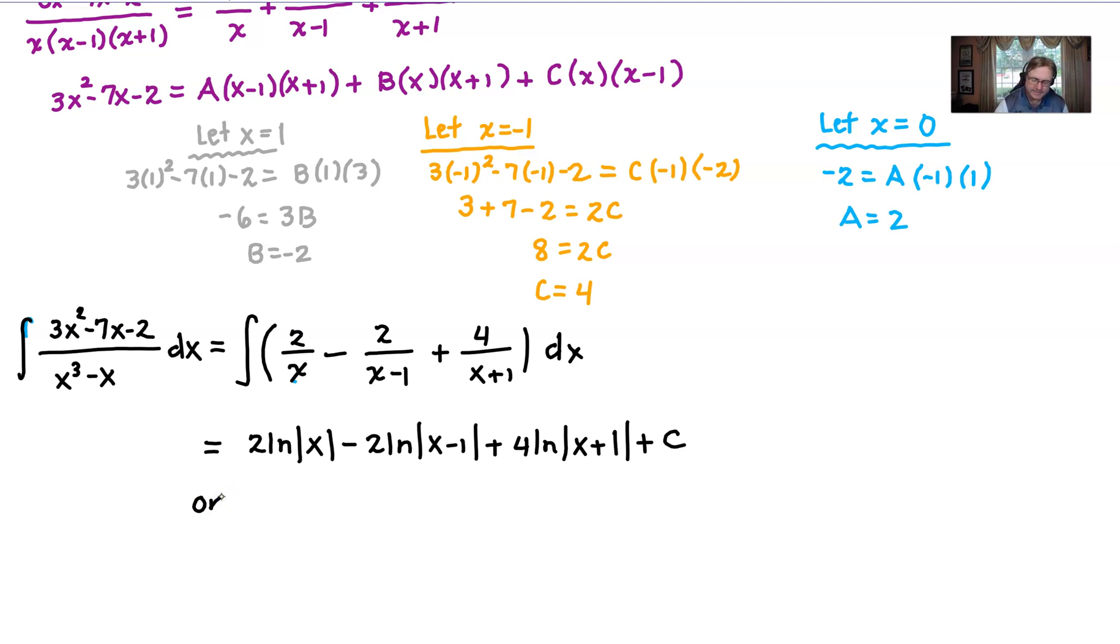Whenever we see coefficients in front of the natural log, we know that those can become exponents. So we could rewrite this so that this absolute value is squared. We could write this x minus 1 so that that absolute value of x minus 1 is squared. Well, if these absolute values are being squared, is it really important that we have absolute values around them in the first place? What does the minus, what does the plus do? So I'll tell you what, let's take a look and see what the calculator does, and maybe let that kind of drive how we could have rewritten.